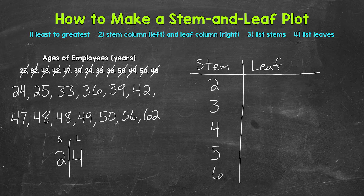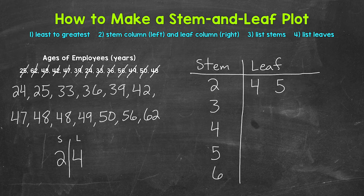Now we need to list our leaves, and we will start with 24 and go in order. So for 24, we have a stem of 2 and then a leaf of 4. Next we have 25, so a stem of 2 and a leaf of 5. Next, 33 — so we move down to the stem of 3: stem of 3 and leaf of 3.